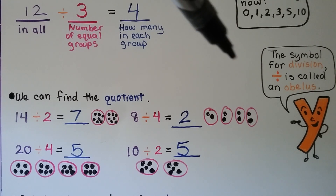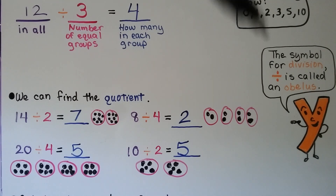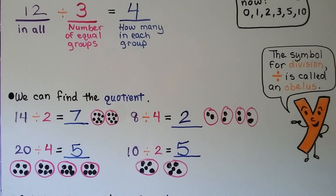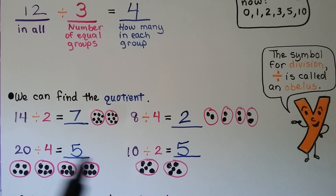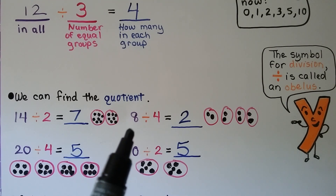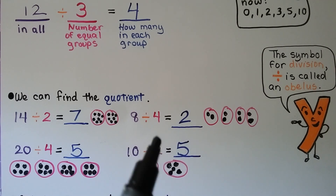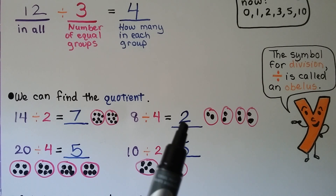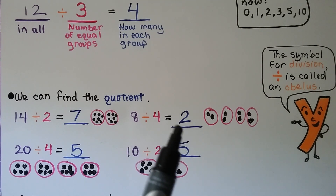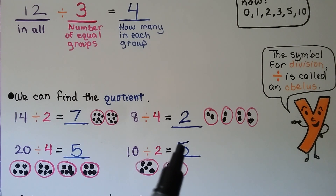Did you know that this division symbol - the line with a dot on the bottom and top - is called an obelisk? You don't hear people use that very much; they usually just say division sign or divided by. Looking at these division equations, like 8 divided by 4 equals 2, can you see how having your multiplication tables memorized would help? If you know that 4 times 2 equals 8, or 2 times 5 equals 10, you would already know the quotient. It's very helpful to memorize your multiplication facts - you do math much quicker.